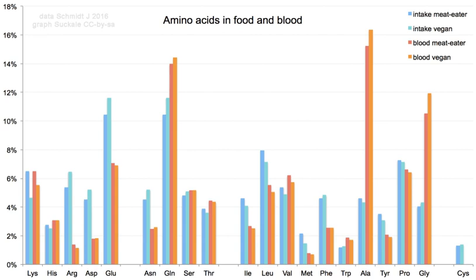Of the 20 standard amino acids, 9 — His, Ile, Leu, Lys, Met, Phe, Thr, Trp, and Val — are called essential amino acids because the human body cannot synthesize them from other compounds at the level needed for normal growth, so they must be obtained from food.